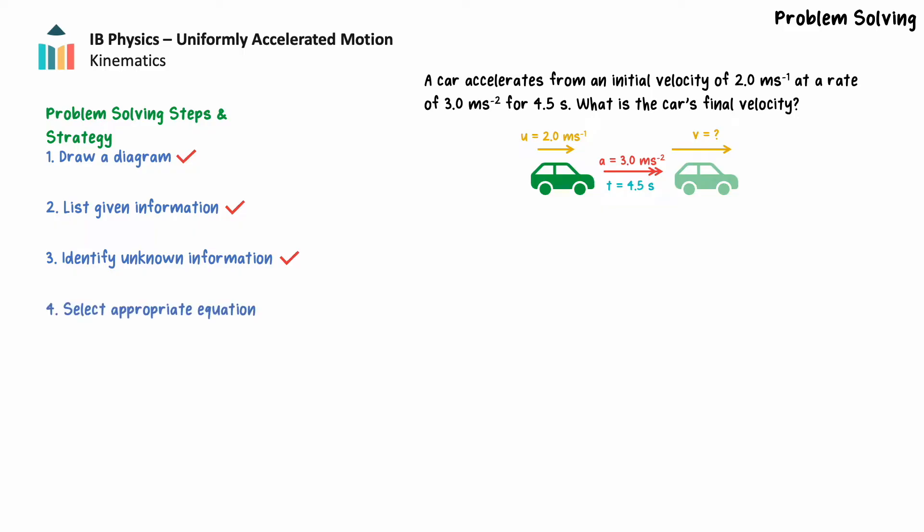Next, we'll select an appropriate equation to use for our calculation. We have four equations in our data booklet to select from. We want to pick an equation that contains the information we have and the information we want to solve for, but does not contain any missing or irrelevant information. Since we don't have or need displacement, we want to select a formula that does not contain displacement, but does contain initial velocity, acceleration, time, and final velocity.